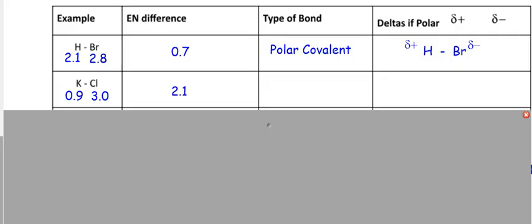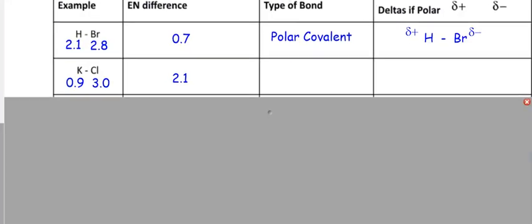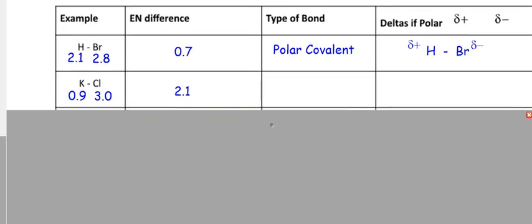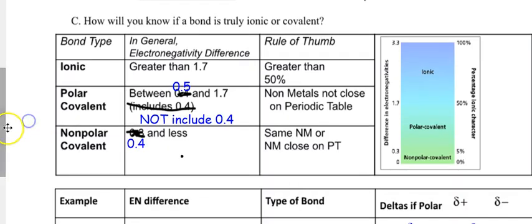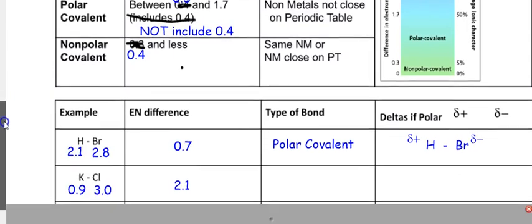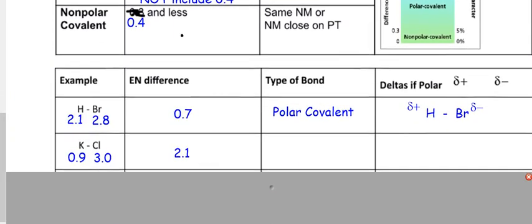Scroll back up again, and what's 2.1? It's definitely greater than 1.7. What's that mean? It's ionic. Do I need to do any of this stuff? No. Why not? This is deltas if polar. This is ionic. You don't have to do it. Let's go to the next one.